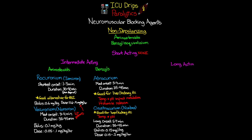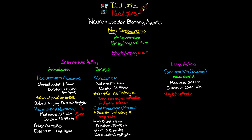Finally, let's talk about our long-acting medications. There's really only one you'll commonly come across — pancuronium, also called Pavulon. This is an amino steroid with a medium onset of 2 to 4 minutes, but a long duration of 60 to 120 minutes — the longest of all these medications. It does have a vagolytic effect, which can impair vagal stimulation and lead to tachycardia in our patients. Bolus dose ranges from 0.04 to 0.1 milligrams per kilogram, and the continuous infusion dose is usually 0.06 to 0.1 milligrams per kilogram per hour.